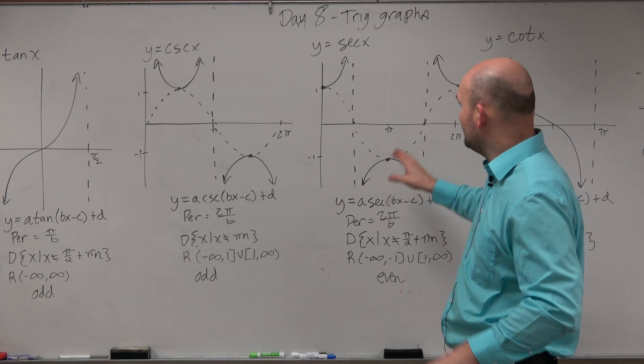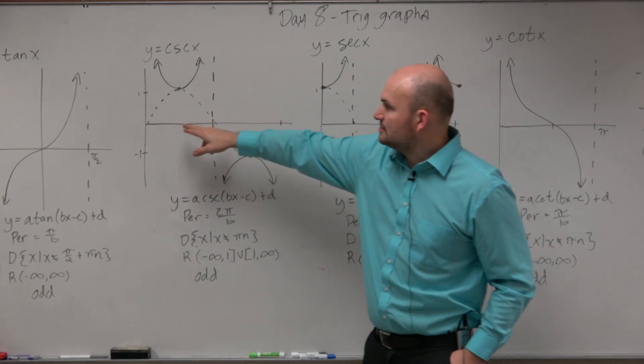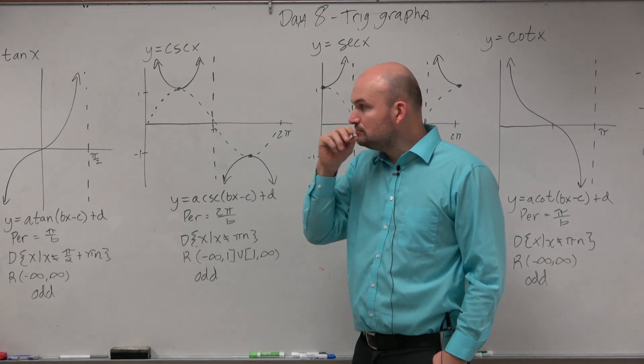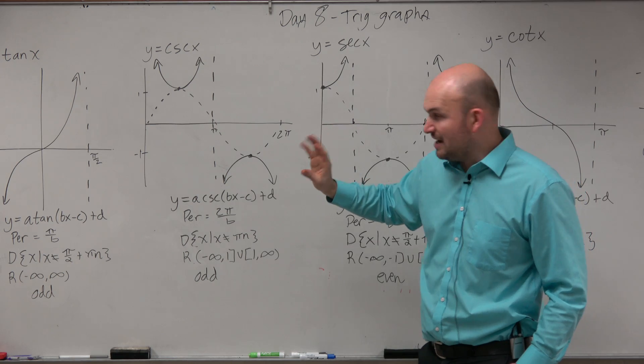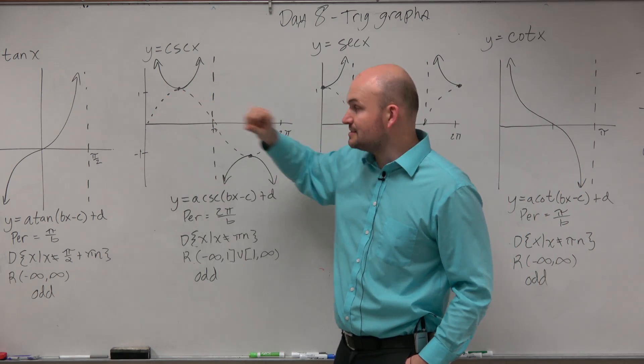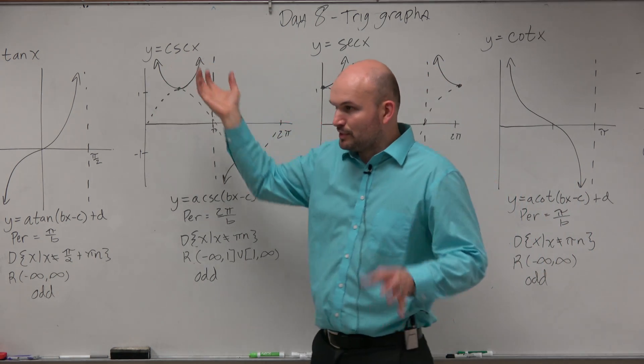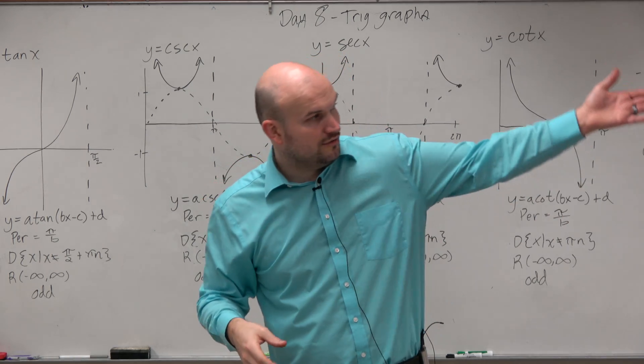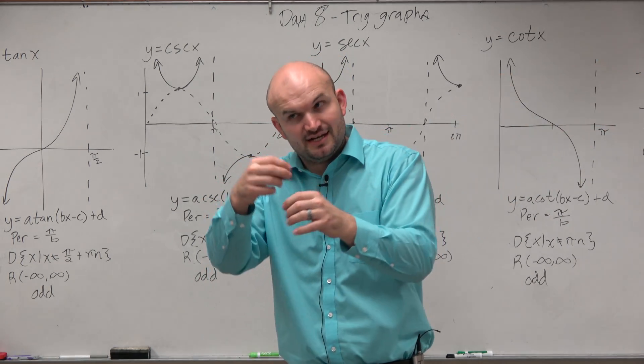For cosecant and secant, I graphed the sine and cosine graph as part of this, so you guys could see how they look. But they're really not a part of the graph. Really, the part of the graph is the solid lines. But what you can see is cosecant, remember, cosecant is the reciprocal of sine. If we said the sine from the unit circle was like the y-coordinate, cosecant is 1 over y.